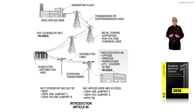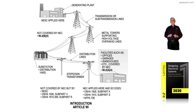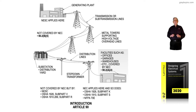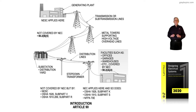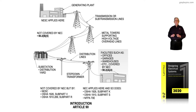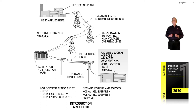On the left-hand side at the top of the illustration, titled 'Generating Plant,' voltage is generated and sent to transformers located at the generating plant. From there, we may have as high as 250 to 350 kV on those transmission lines you see on the towers, labeled 'metal towers supporting high voltage overhead lines.'